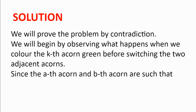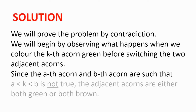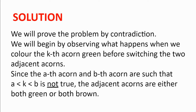Since the two adjacent acorns a and b are such that a < k < b is not true, the adjacent acorns are either both green or both brown. This is because a < k < b implies that the two adjacent acorns are one green and one brown — one of them is greater than k and hasn't been coloured yet, and one is less than k and so has been coloured. But since this is not true, the acorns are not green and brown, and so they are either both brown or both green.